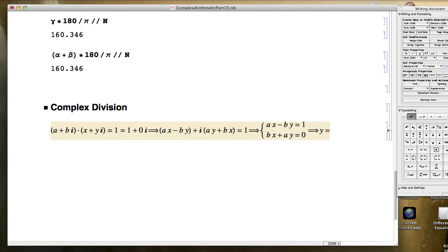Let's see here. Just making double checking to make sure everything is good. All right, so if you solve that second equation for y in terms of x, what you'll get is y will be negative b over a times x.